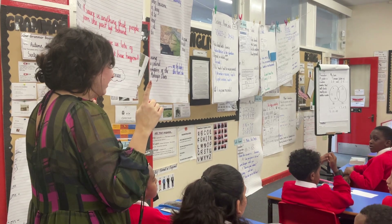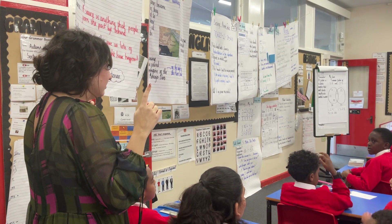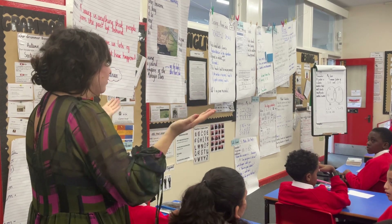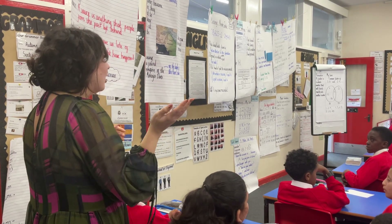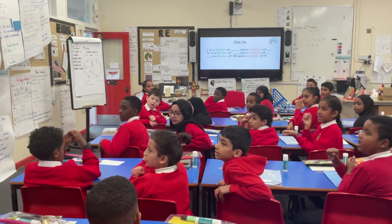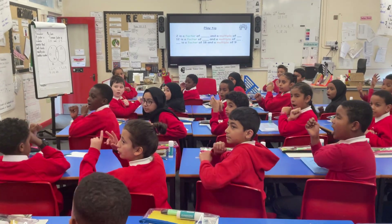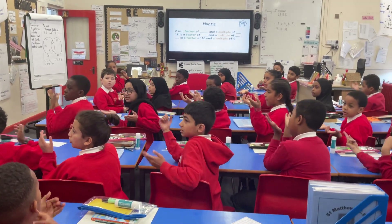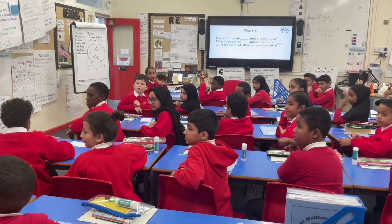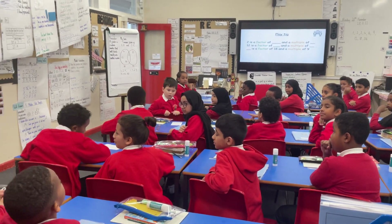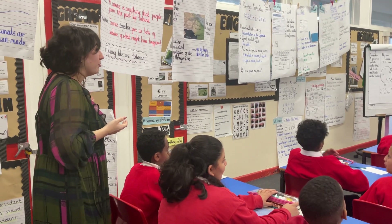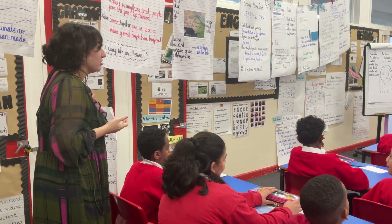Let's tune in to each other. My turn: a multiple is the product of two numbers being multiplied. Your turn. [Students repeat] A multiple is the product of two numbers being multiplied. So Murat, when I multiply something by nine, will I get one as a multiple, as a product?